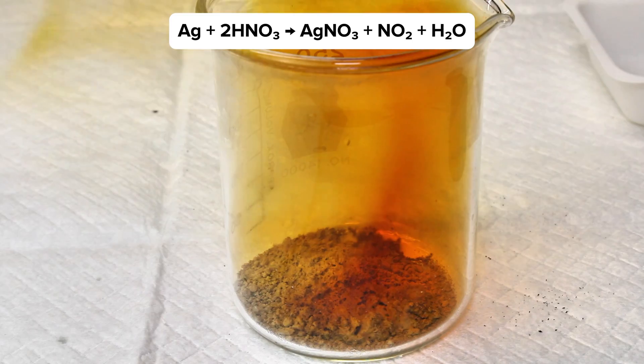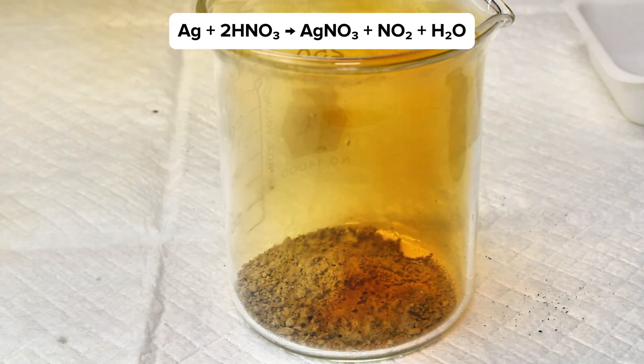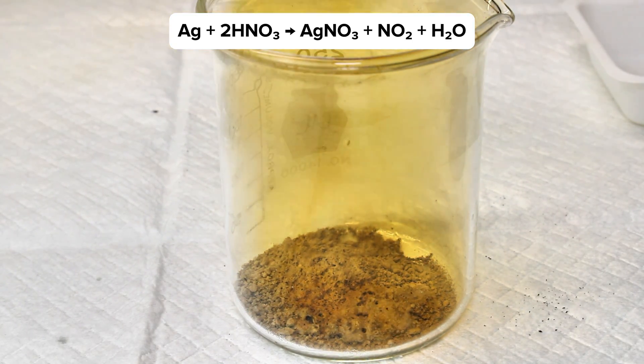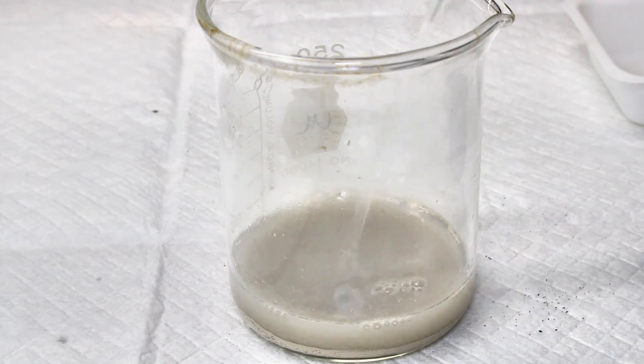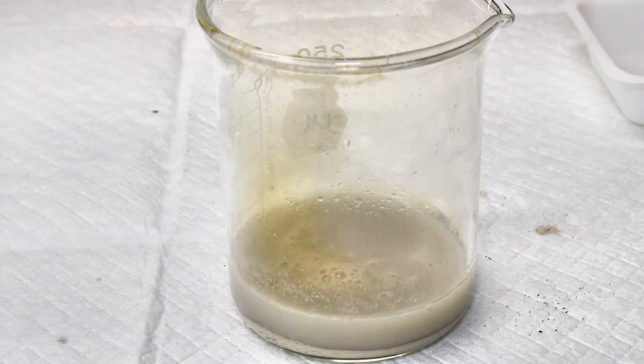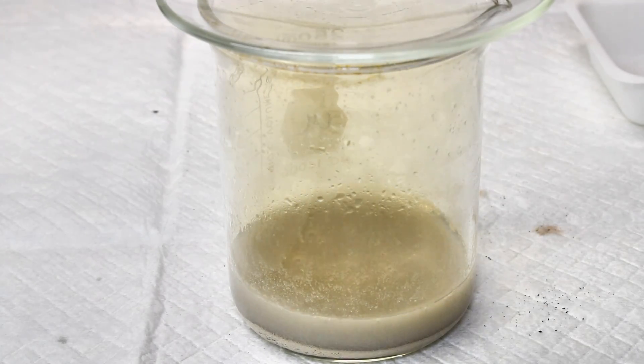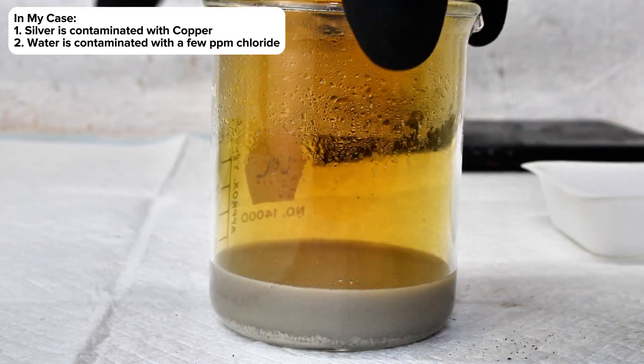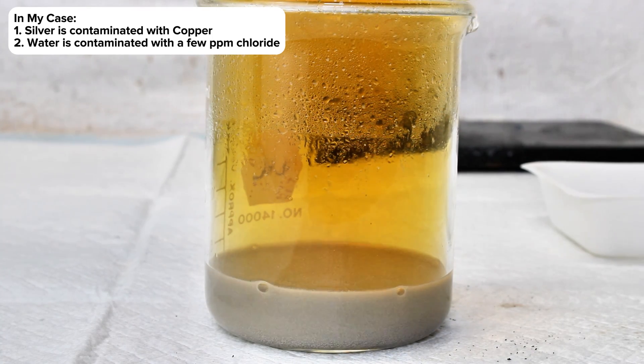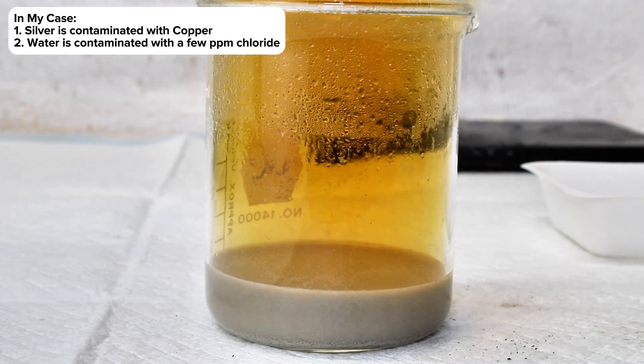If you happen to have access to lab-grade silver and nitric acid, this process is a good deal easier as silver is extremely sensitive to impurities. In my case here, however, I used silver powder that I precipitated from a crude solution of silver nitrate using copper metal, and so there is a tiny amount of undissolved copper still present which will discolor the solution a light blue and need to be removed later.